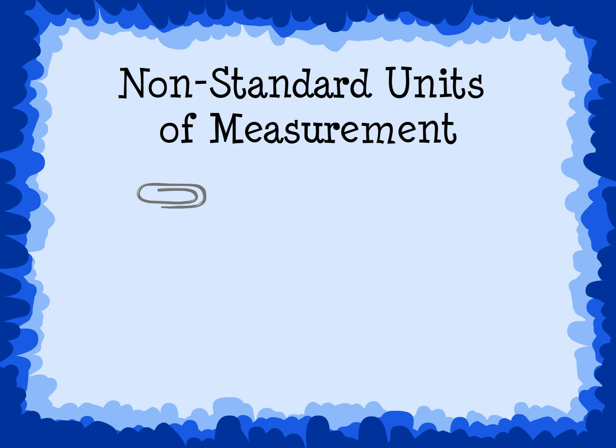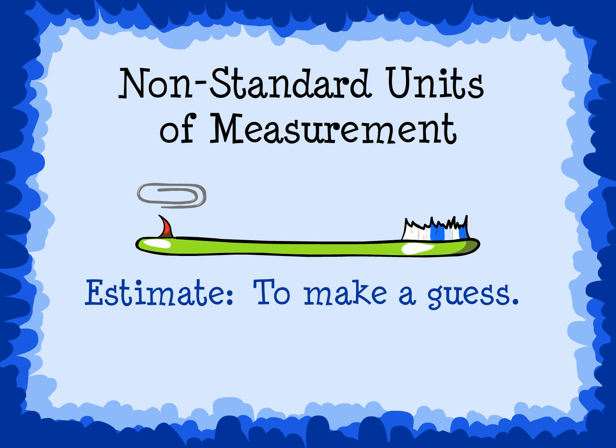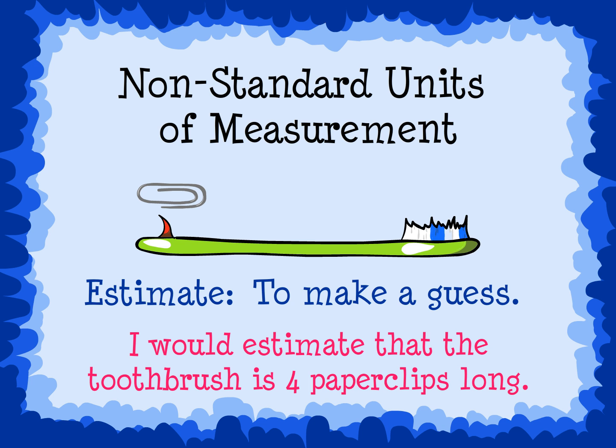Here is one paper clip, and here is a toothbrush. Can you estimate, or predict, how many paper clips long the toothbrush is? Estimate means to make a guess. I would estimate that the toothbrush is about 4 paper clips long. To check our estimate, we need to measure the toothbrush with paper clips.